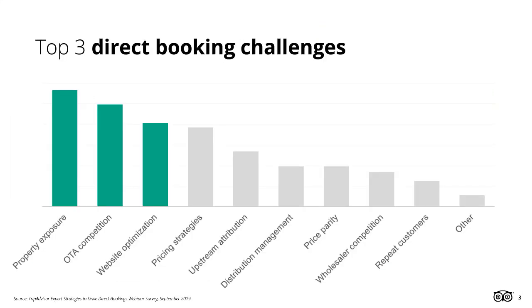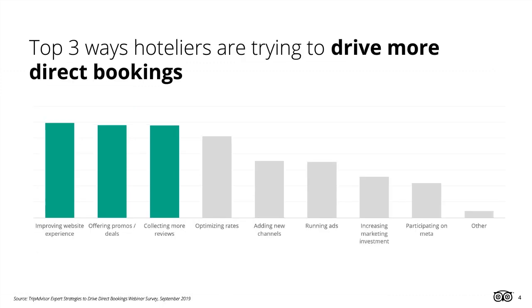Now, let's start today's session with some information you shared with us in the registration survey. Over a thousand of you responded — thank you so much. You told us your top three most common direct booking challenges, which were property exposure, OTA competition, and website optimization. You also told us the top three most common ways you're tackling these challenges: improving website experience, offering promotions and deals, and collecting more reviews. That feedback is what's influenced the content we'll be covering today.